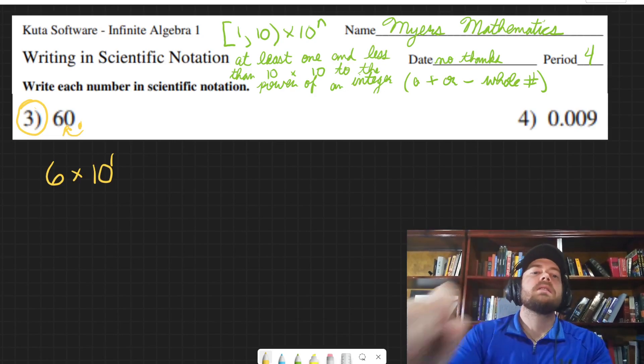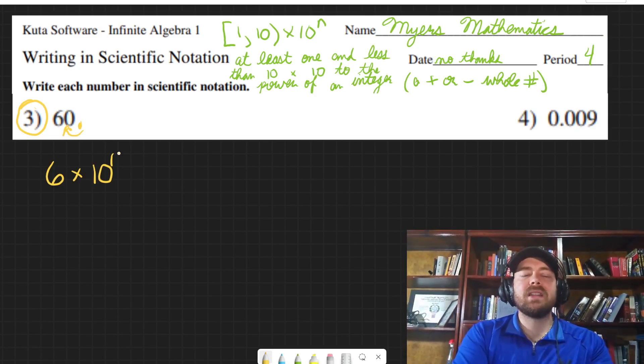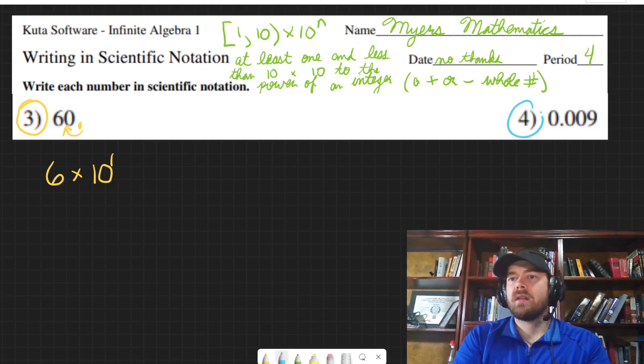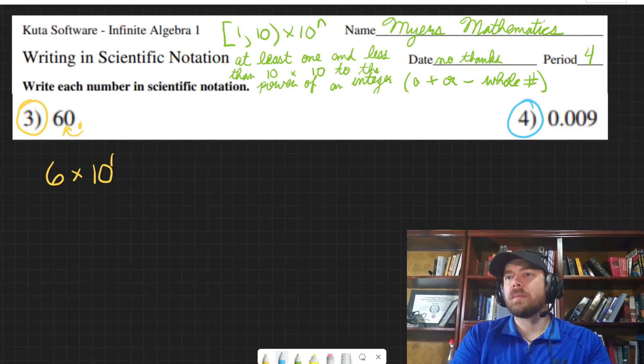You can just think about it like this: ten to the first power is ten, so six times ten is sixty. Just to double check. Over here, it's going to be the reverse. We're making a smaller number bigger.